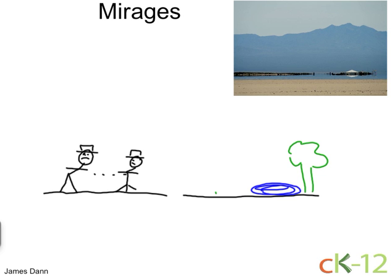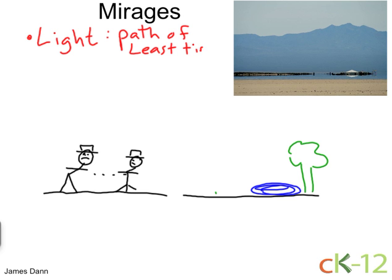He's seeing real light rays. What's going on is two things. One, the laws of physics tell us that light takes the path of least time — not least distance, but least time. And that's Fermat's principle of light.